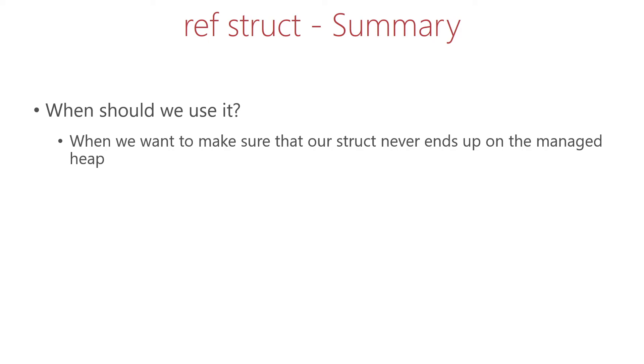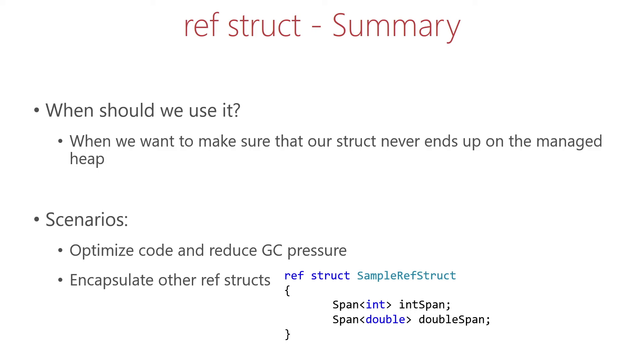I would say there are two main use cases here. First of all, if you want to optimize your code and want to reduce pressure on the GC, and the second scenario is when you want to have a type that encapsulates other ref structs.